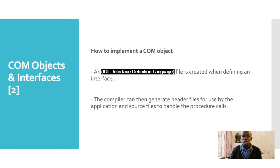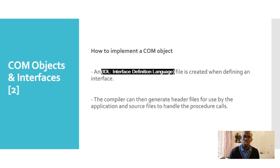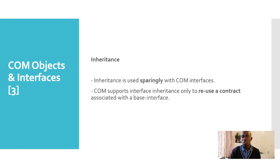How to implement a COM object — to implement a COM object we use what is known as an IDL file. We're going to be going into the practicalities of writing an IDL file. IDL stands for Interface Definition File, and an IDL file is created when defining an interface. The compiler can then generate header files for use by the application and source files to handle the procedure calls. I do encourage you to check out my video on Windows Runtime Components if you are interested, but we are going to be diving even deeper into this in this particular course.